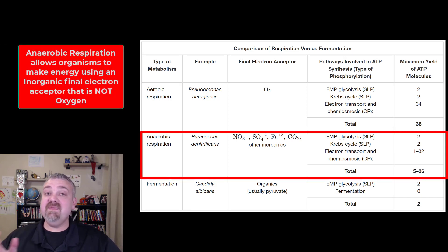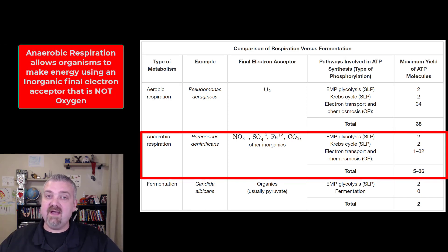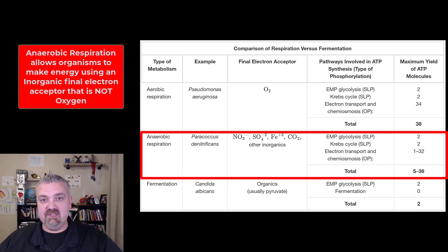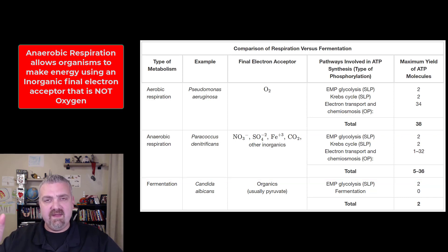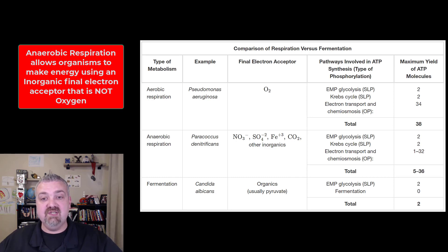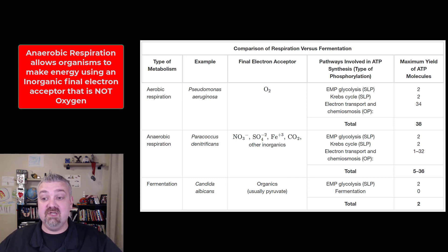Many organisms use some other inorganic substance other than oxygen as their final electron acceptor, as you can see here, and they're going to use what's called anaerobic respiration. They don't have quite the concentration gradient or electrochemical gradient that we have when we use oxygen, so they can't generate as much ATP. The totals for anaerobic respiration are between 5 and 36, depending on the electron acceptor.